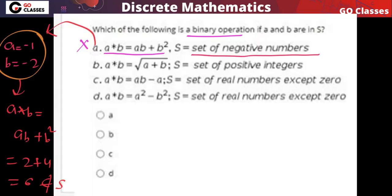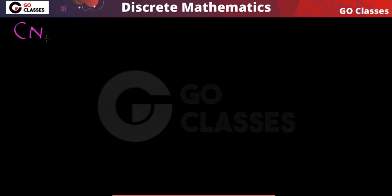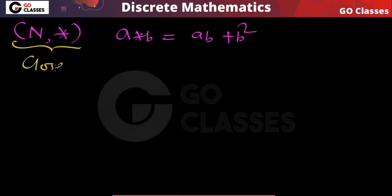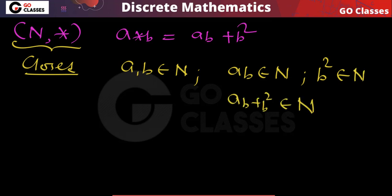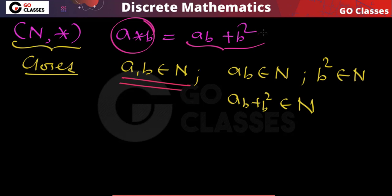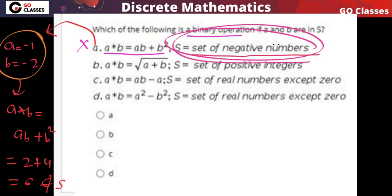However, this same operation ab + b² is a binary operation on the set of natural numbers. If you take any two natural numbers, their multiplication is a natural number, their square is a natural number, and their addition is also a natural number. So for any two natural numbers, applying this operation also yields a natural number — it is closed on natural numbers.